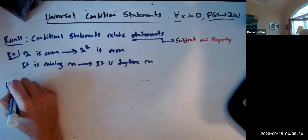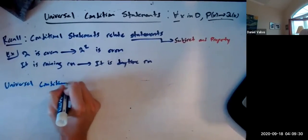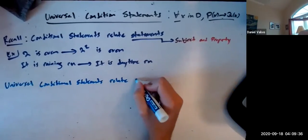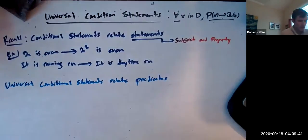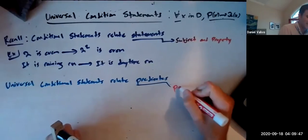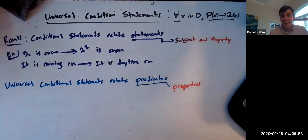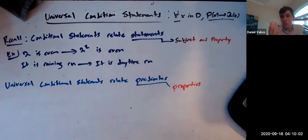Universal conditional statements relate predicates. And predicates, they're just properties. They're disembodied properties, right? They don't even have a subject. It's just saying for X, like for any X or something like that. And we'll do an example. So predicates are properties - they're basically pure properties, right? And you can plug subjects into them.